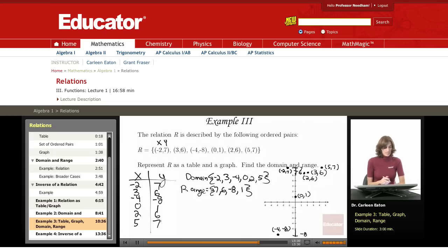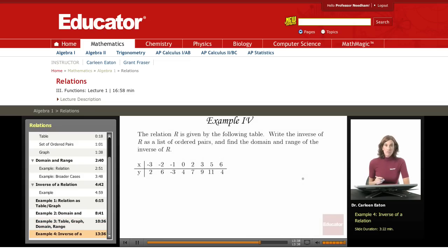So I represented the relation as a table, as a graph, and I found both the domain and the range. Okay, in example 4, the relation R is given by the following.